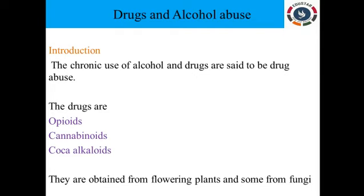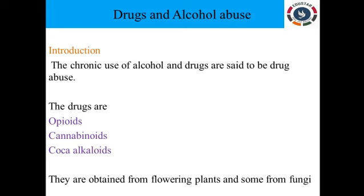Drugs are classified into opioids, cannabinoids, and coca alkaloids based upon their occurrence and functions. Most drugs are obtained from flowering plants, as well as some from microorganisms like fungi. First we will see the opioids. Opioids are obtained from morphine, which is also a drug.